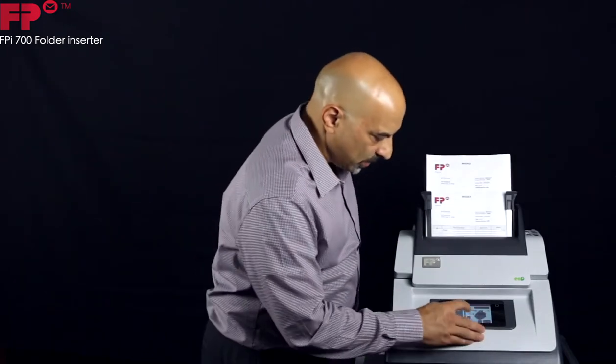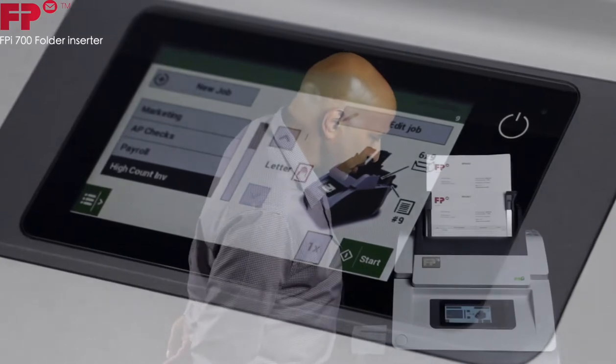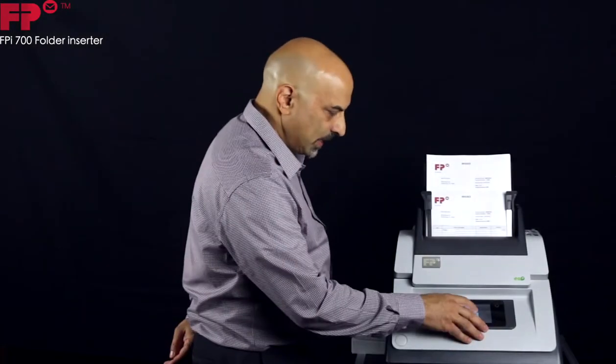And basically the way this works is I already have a job program down here. So we're just going to push a button. And this is one page into a six by nine and a half. And away we go.